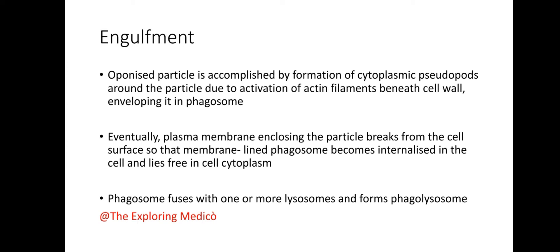Engulfment: the opsonized particle is accomplished by formation of cytoplasmic pseudopods around the particle, due to activation of actin filaments beneath the cell wall. The particle is enveloped in a phagocytic vacuole. Eventually the plasma membrane enclosing the particle breaks from the cell surface so that the membrane-lined phagosome becomes internalized and lies free in the cell cytoplasm.